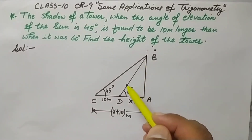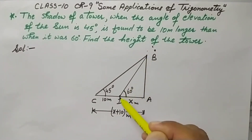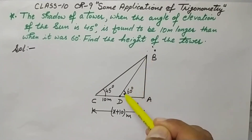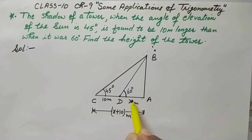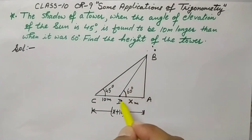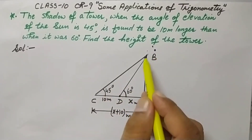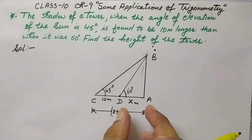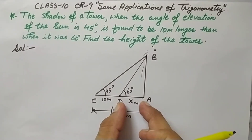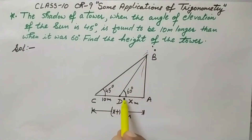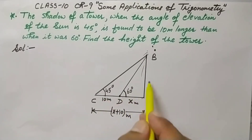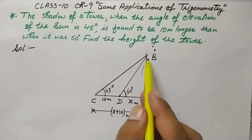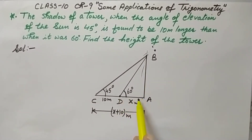In the small right angle triangle ABD, we will find out the value of X in terms of AB — this is equation 1. And in the bigger right angle triangle ABC, we will find out the value of AB by substituting the value of X from equation 1. So in small triangle ABD, find X; in triangle ABC, find AB and substitute X from equation 1.